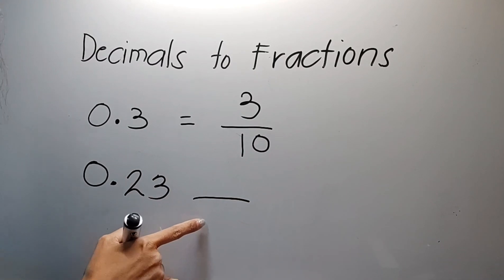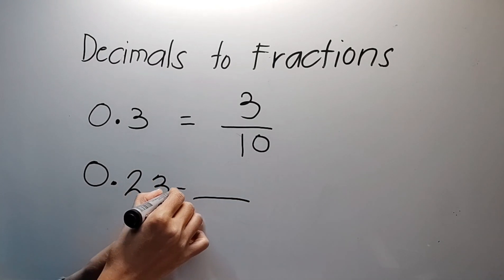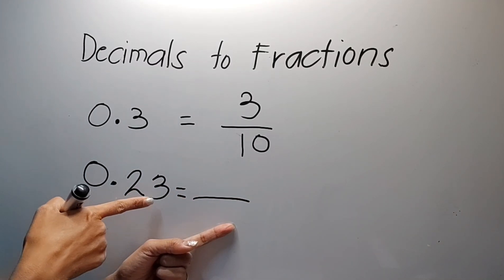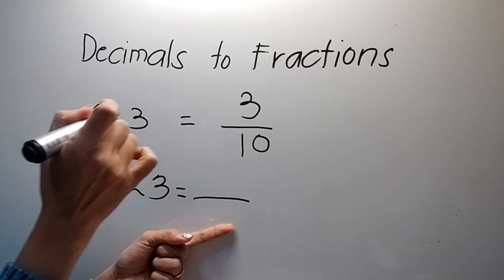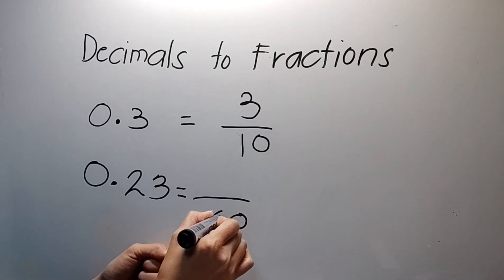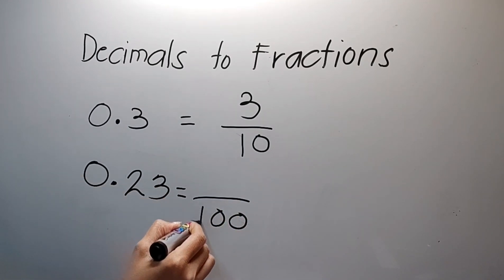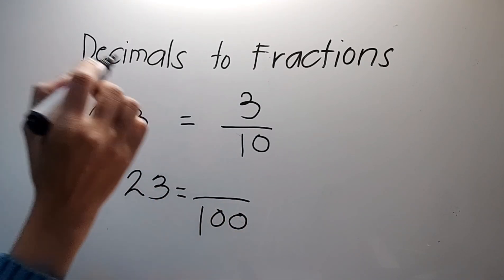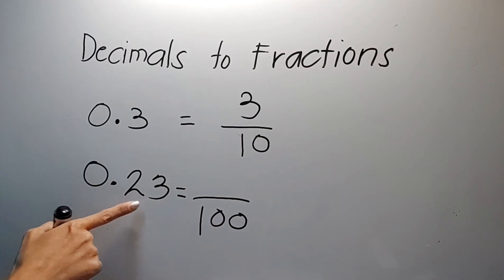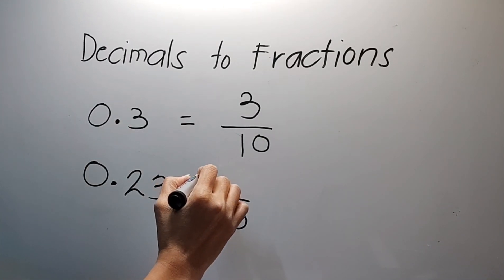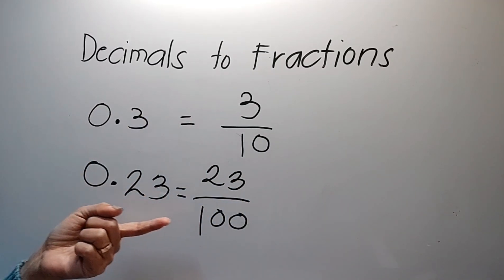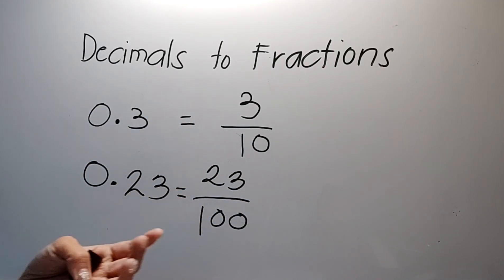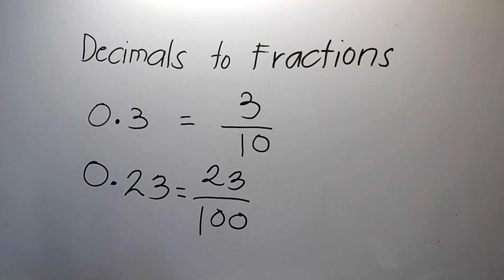Another example. Unahin natin yung denominator, yung nasa baba ng fraction. One, two — dalawang places after ng decimal point. So ibig sabihin, dalawang zero, at maglagay ng one — kaya one hundred. And then you copy the decimal numbers after your decimal point. So ito ay naging twenty-three hundredths.